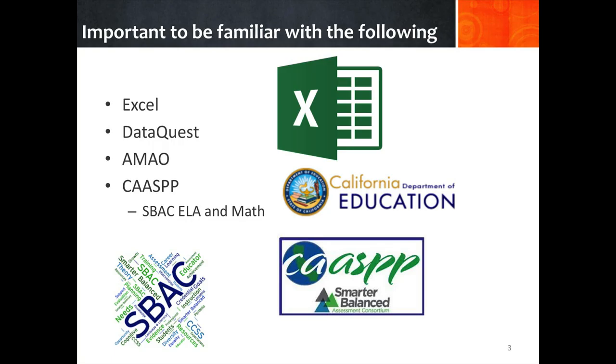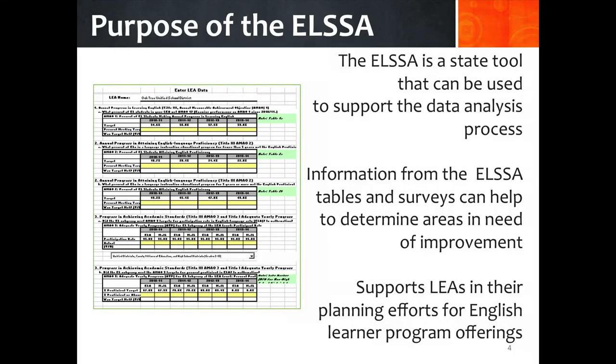In the session, we will review the four parts of the ELSA and provide hints on how to review the information with your district data. The ELSA is an Excel workbook with tabs and formulas that facilitate the capturing of data. The data needed can be found on the CDE or California Department of Education DataQuest reports under the English Learners and Title III Accountability selections. The other location is on the California Assessment of Student Performance and Progress, or CAASPP, reports for the English Learner subgroups in the subjects of English Language Arts and Mathematics. The ELSA is a data collection tool that assists education agencies or districts to examine their programs and services for English learners.